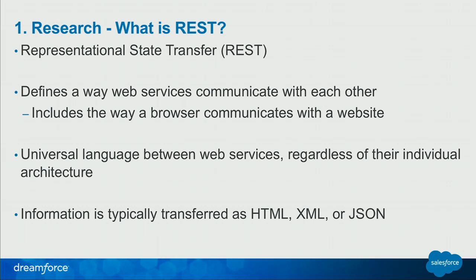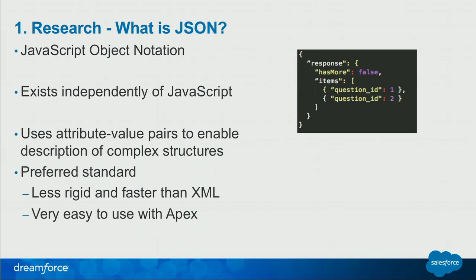JSON allows two web servers — regardless of how they're built, whether Java, .NET, PHP — to communicate using this format. JSON is a little less rigid than XML and is typically a faster way to transfer data. It's not as structured. And as we'll see today, Apex makes it really, really easy to work with JSON strings. If you've looked at this stuff before and said 'I don't know what to do,' after today it's going to be so much easier.